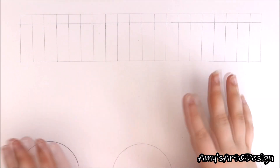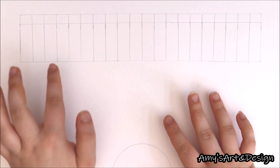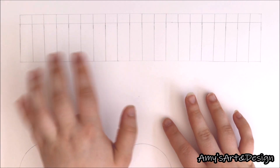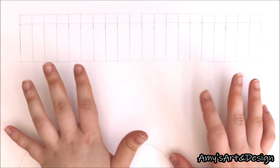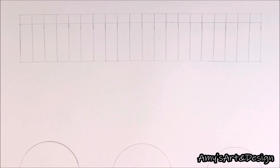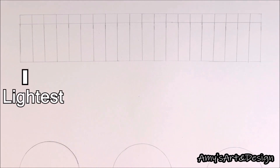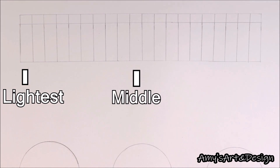Here we have our chart and as I touched upon at the beginning of this video, I've drawn out 20 boxes because there are actually 20 shades of graphite pencils in the graphite pencil chart. In the first box will be the lightest shade of graphite pencil, and the pencil shades are going to get slightly darker in each box leading up to the last box on the right, which will be our darkest shade.